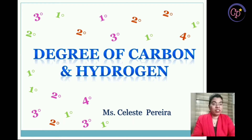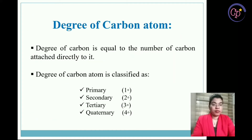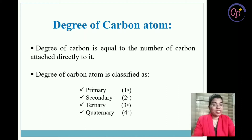Coming to the topic, when you say the word degree — degree of carbon and hydrogen — degree has been classified as primary, secondary, tertiary, and quaternary. First of all, let's learn the degree of carbon atom. Degree of carbon is equal to the number of carbon atoms directly attached to it.